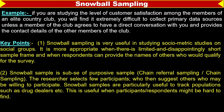Key points: snowball sampling is very useful in sociometric studies on social groups. It is more appropriate when there is a limited or short sample frame and when respondents can provide the names of others who would qualify for the survey. Snowball sampling is also very useful to track hard-to-reach populations such as drug dealers. This is useful when participants and respondents might be hard to find.